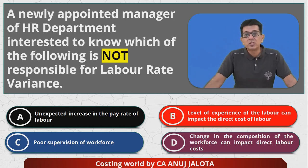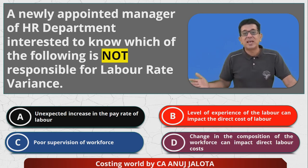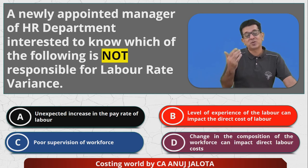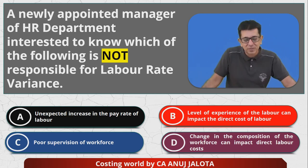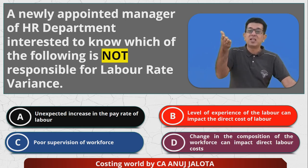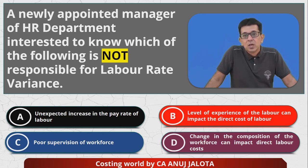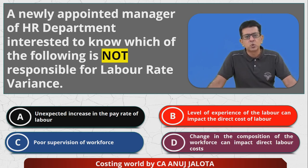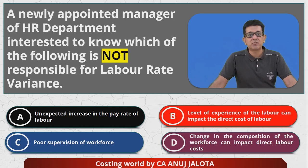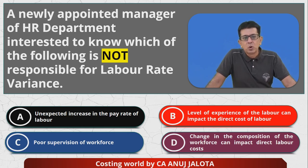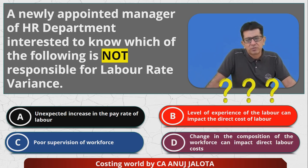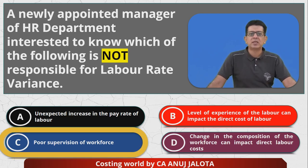Option D: change in composition of the workforce. If you employ more skilled workers, you'll have to pay them higher; if you employ less skilled workers, you pay them less than standard rate. So rate variance gets affected. Out of A, B, C, D, C definitely cannot be a reason for labor rate variance. The correct answer is C.